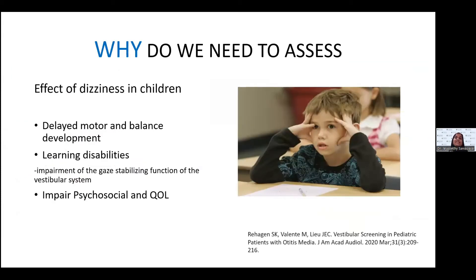Why do we need to assess dizziness in children? Studies have stated that dizziness in children, especially when secondary to vestibular causes, leads to delay in motor and balance development. A child with vestibular loss tends to walk, stand, and sit at a later age compared to age-matched peers. There are also learning disabilities requiring visual tasks, and because of impairment in gaze-stabilizing function, children with vestibular loss tend to become slow learners. This in turn impairs scholastic performance and overall quality of life.